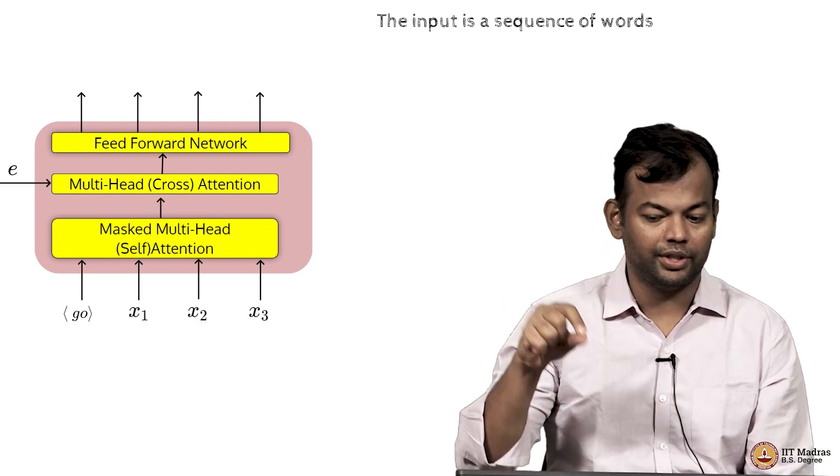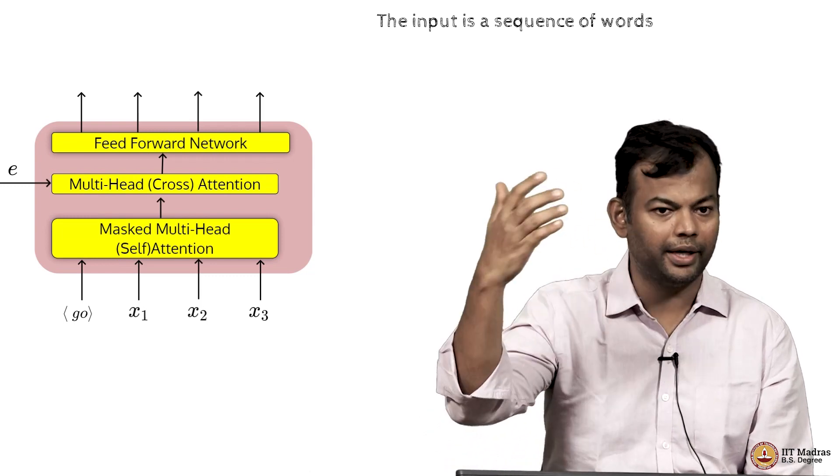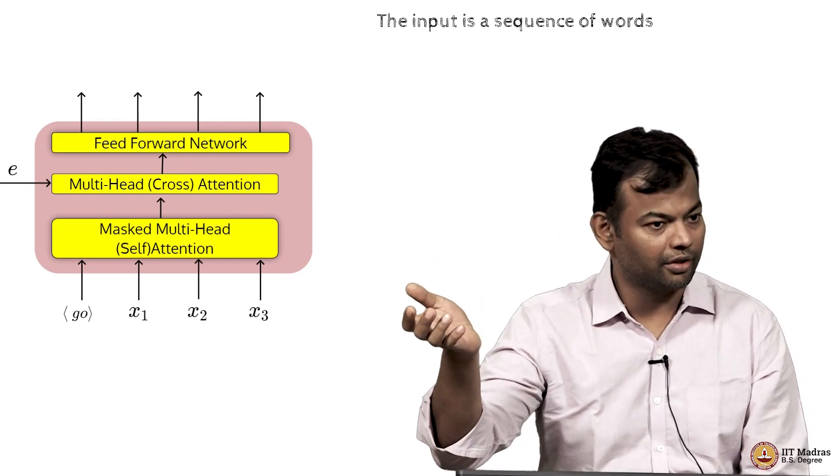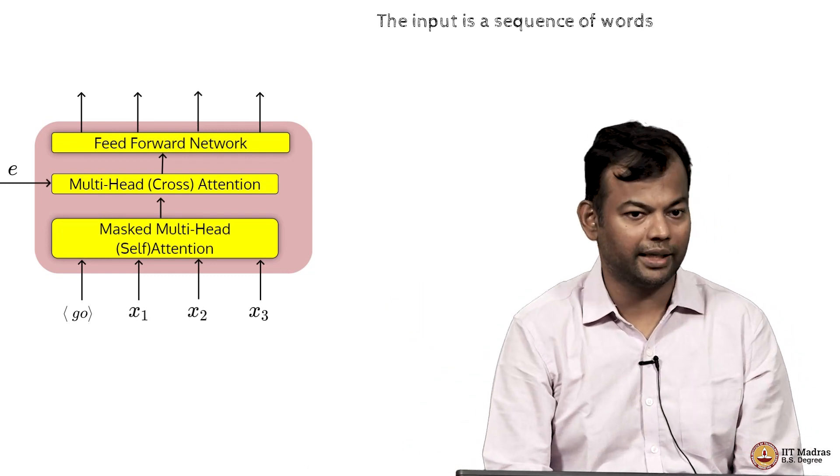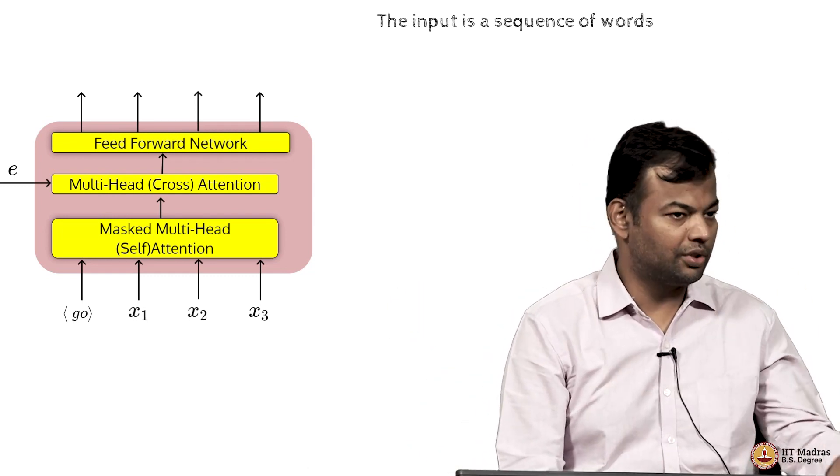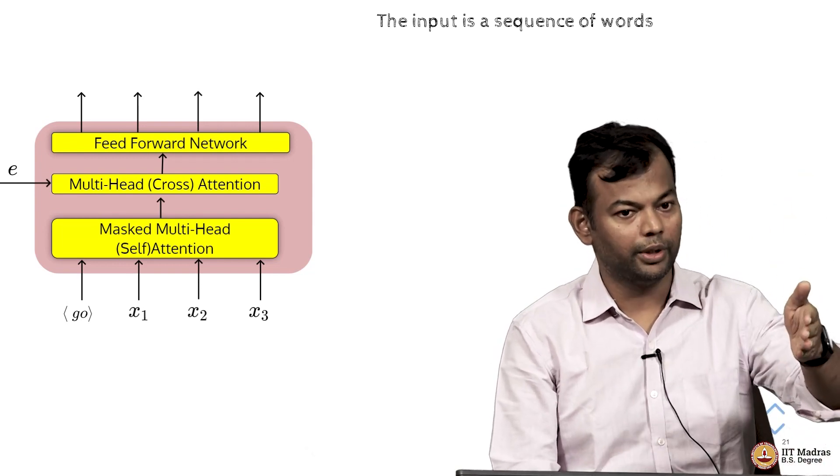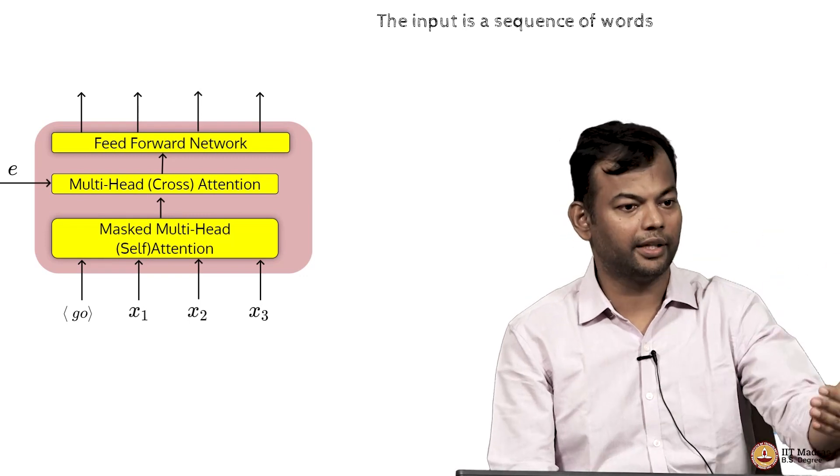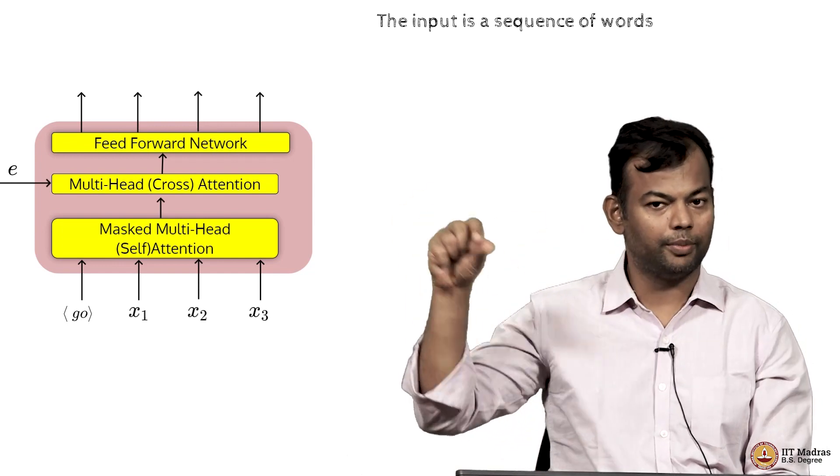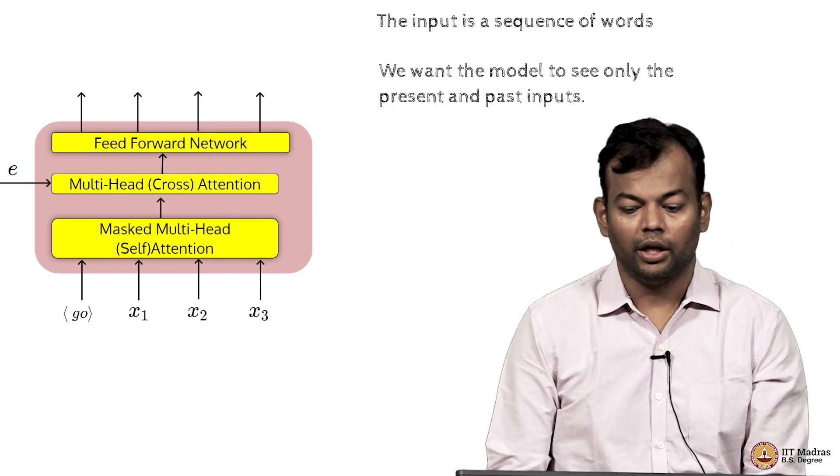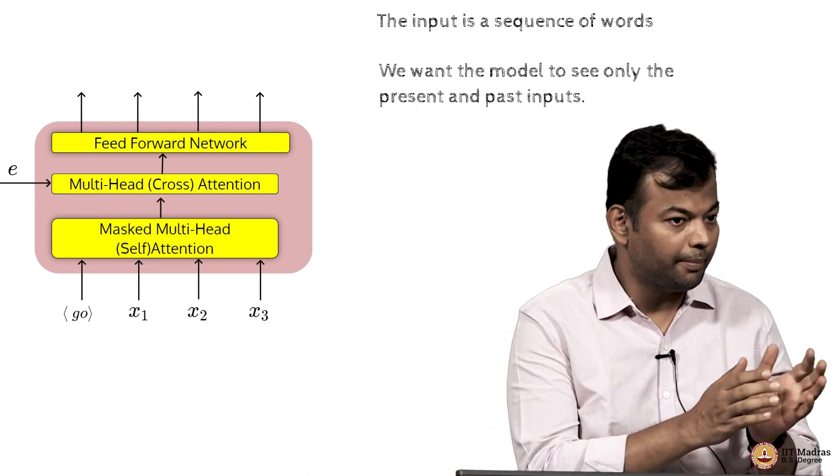And what is the task at hand? We will have an input which is a sequence of words and given a sequence of words we want to predict the next word. That is the basic task of language modeling the way we saw it, that you are given k words and you want to predict the k plus 1th word and this k could start from 0. So you are not given anything, you are just given the go symbol, you want to predict the first word. When you are given the first word you want to predict the second word and this can iteratively continue. So the input is going to be such a sequence of words and of course you want the model to see only the present and past inputs.